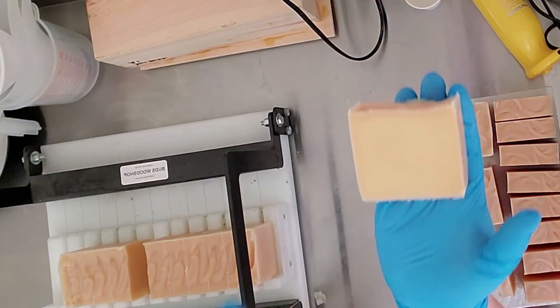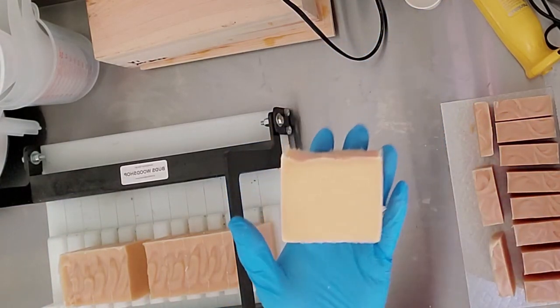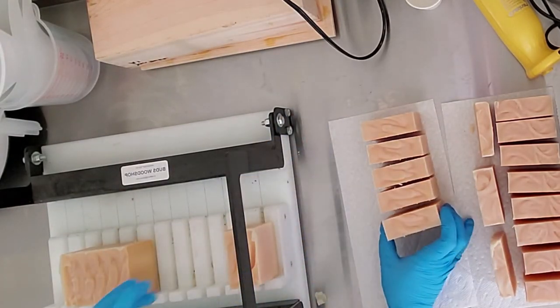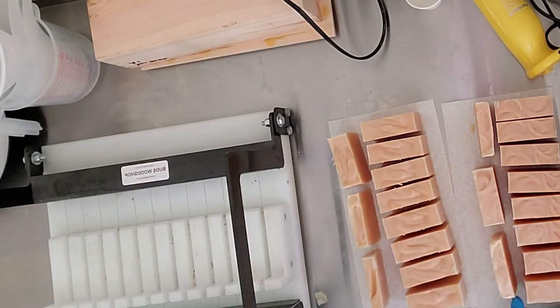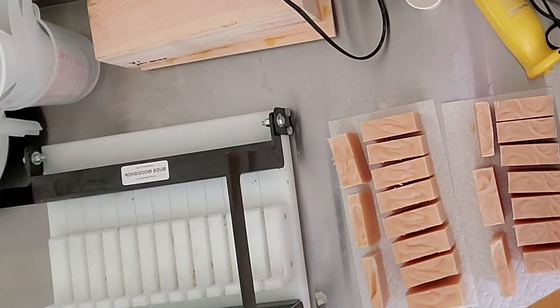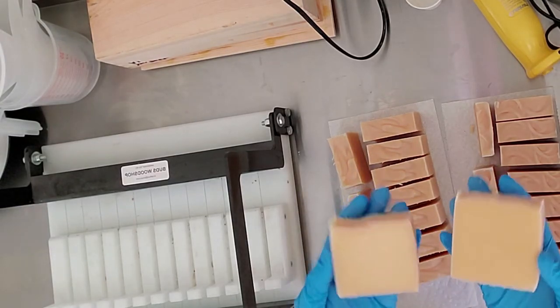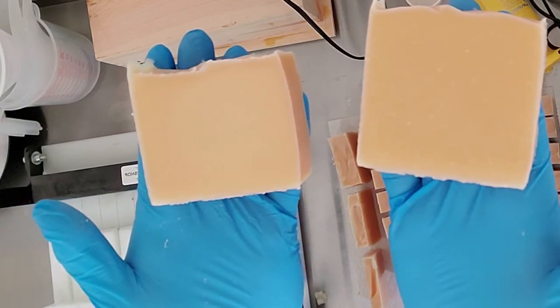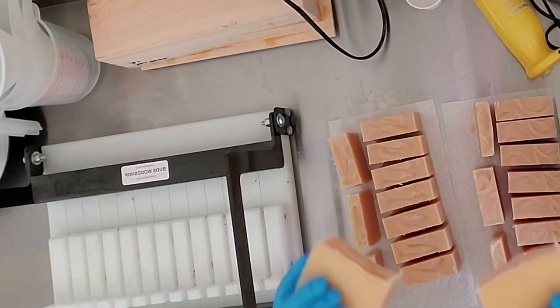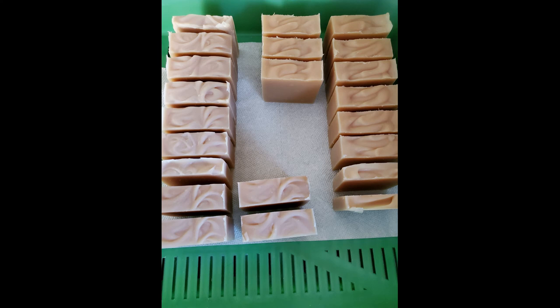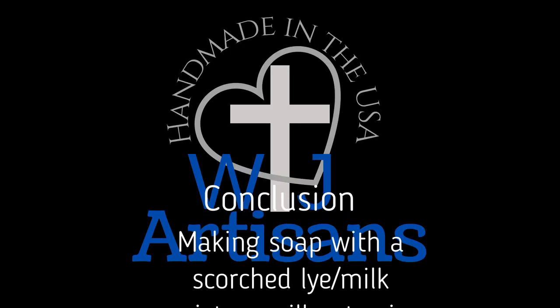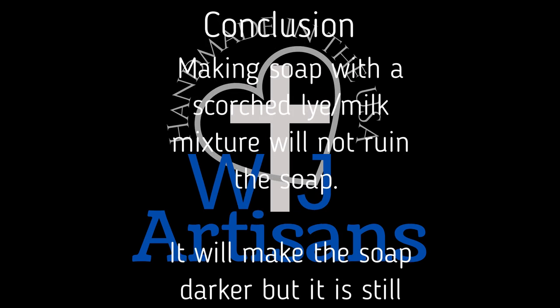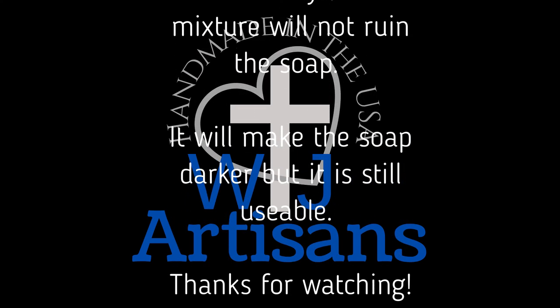Here's the second bar made with the fresh milk and a comparison of the two you will see in a second here. This is just 24 hours of curing. There's not much difference and as it cures it does get a little bit darker, as you can see. This is a week later. That's the conclusion: making soap with scorched lye milk mixture will not ruin the soap. It will make the soap darker but it's still usable.